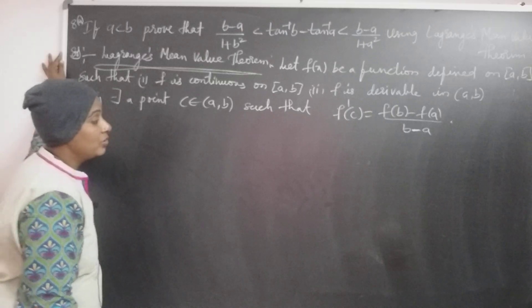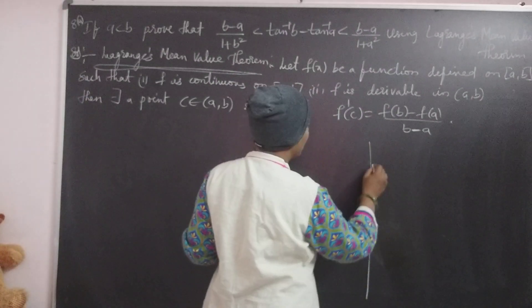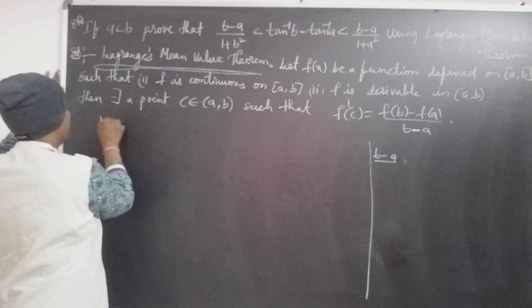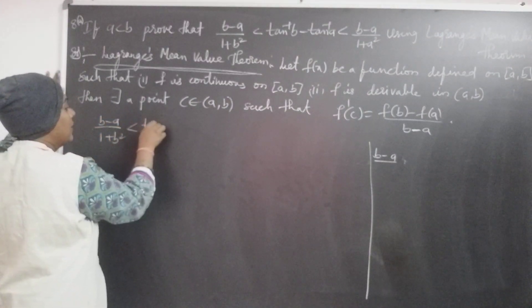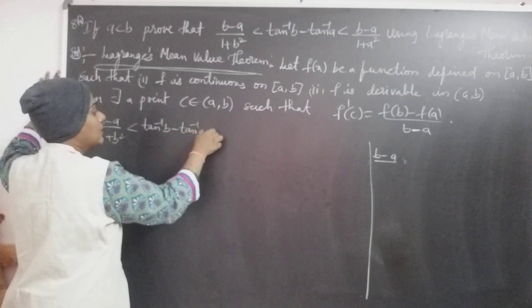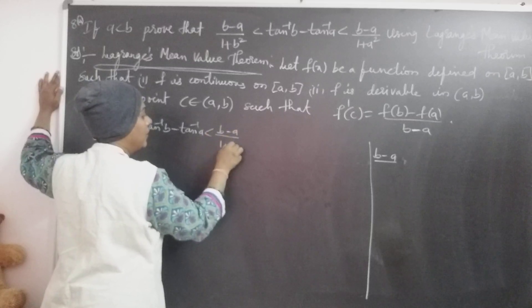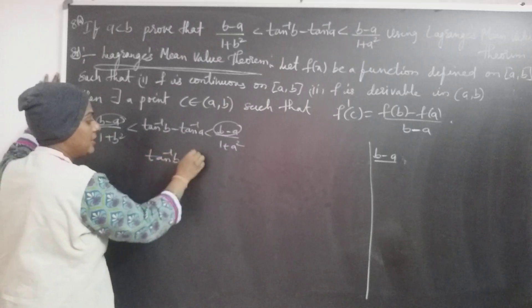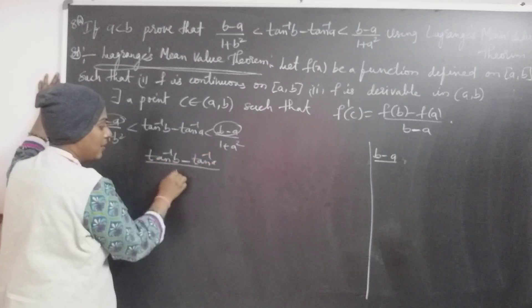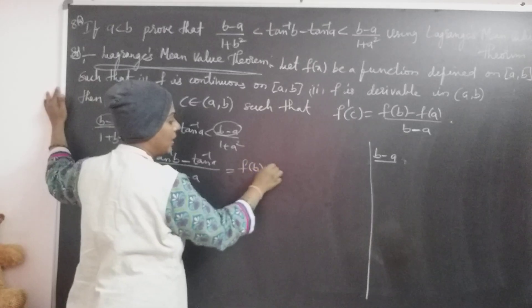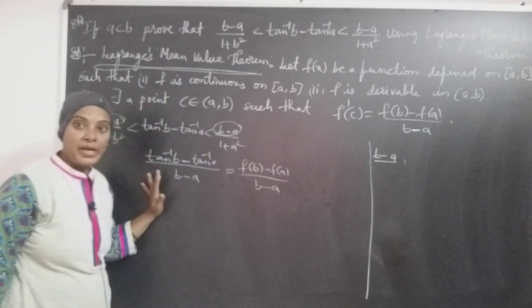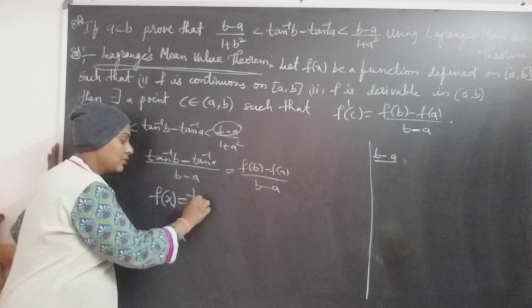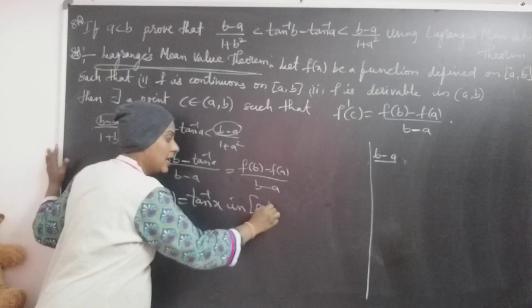First, observe the relation. B minus A by 1 plus B squared is less than tan inverse B minus tan inverse A, which is less than B minus A by 1 plus A squared. Dividing through by B minus A, the middle term becomes tan inverse B minus tan inverse A by B minus A, which equals f(B) minus f(A) by B minus A. By this relation, the function is clearly f(x) equals tan inverse x.